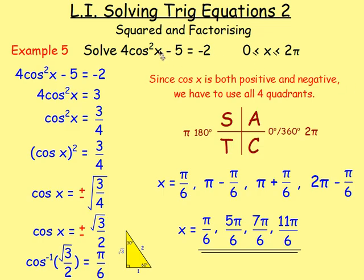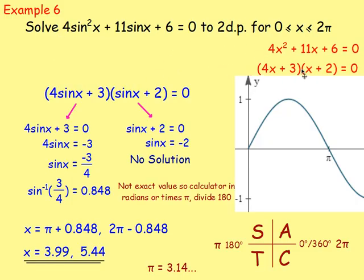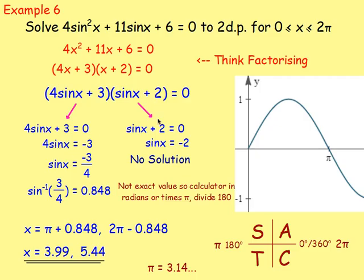In the second lesson on solving trig equations, we looked at squared terms and factorising. One example had cos squared — remember, cos squared means cos x all squared, so you square root both sides. When you square root you get both plus and minus values, meaning you use all four quadrants. For an example like sine squared + 11 sine x + 6 = 0, you can think of it like x squared + x + number and factorise. Go off to the side, factorise, then swap x back for sine x and solve.